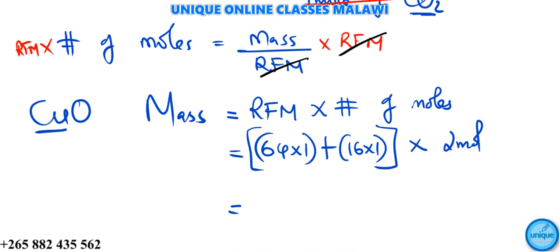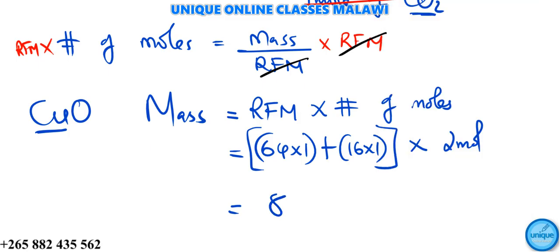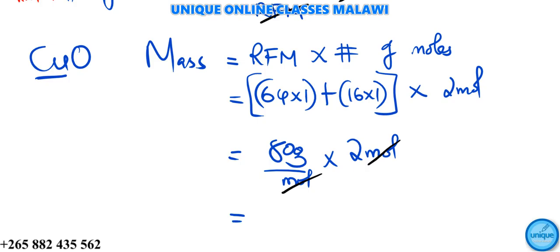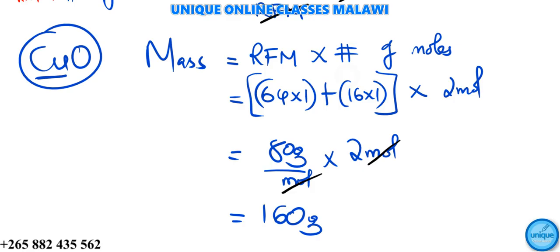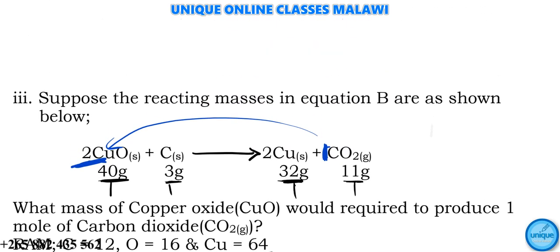Calculating: copper is 64, oxygen is 16, so the RFM of CuO is 64 plus 16 equals 80 grams per mole. We need 2 moles, so mass equals 2 times 80 equals 160 grams of copper oxide to produce one mole of carbon dioxide.